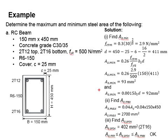Using the second equation, you get AS minimum equals 92 mm².